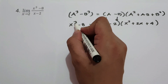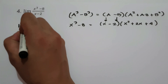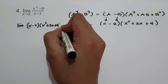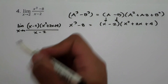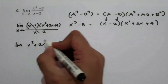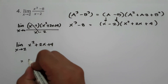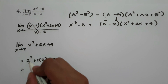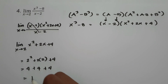So we write x cubed minus 8 as x minus 2 times x squared plus 2x plus 4. We have the limit of x minus 2 times x squared plus 2x plus 4 over x minus 2 as x approaches 2. Canceling x minus 2, we get the limit of x squared plus 2x plus 4 as x approaches 2. Substituting x equals 2: 4 plus 4 plus 4 equals 12. So our answer is 12.